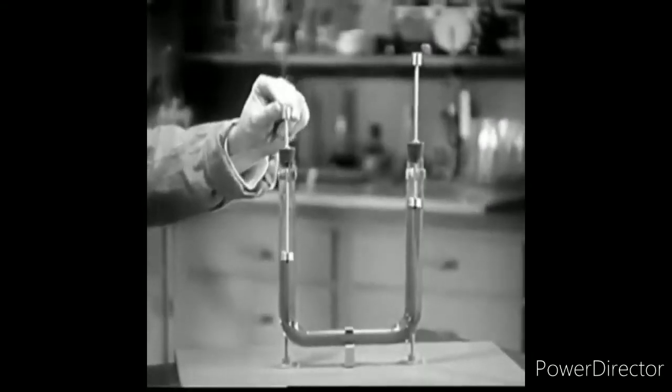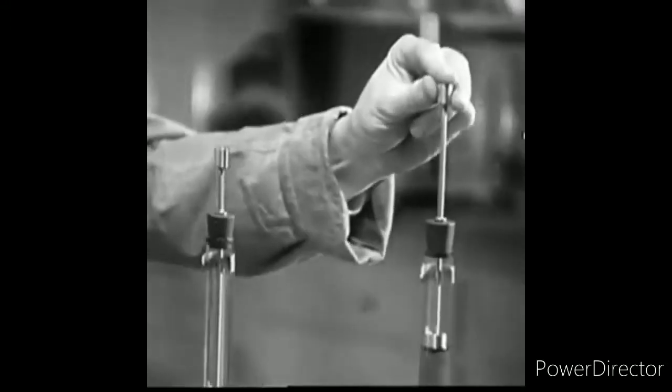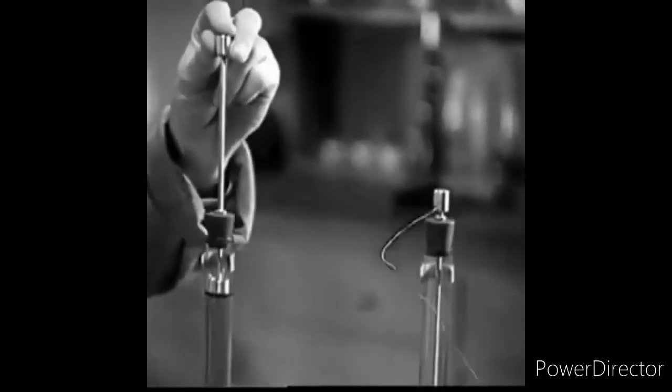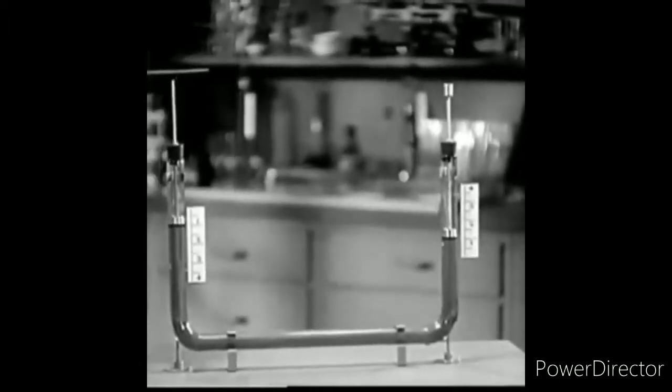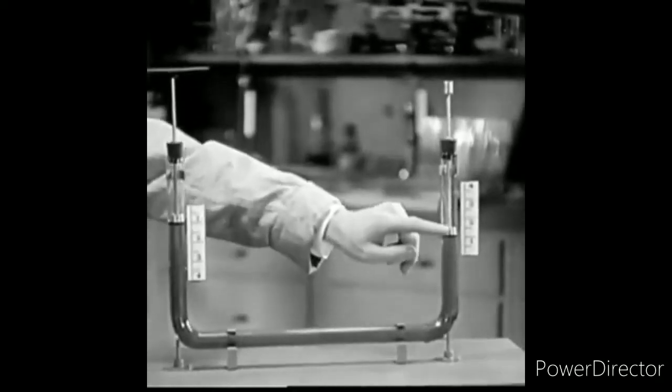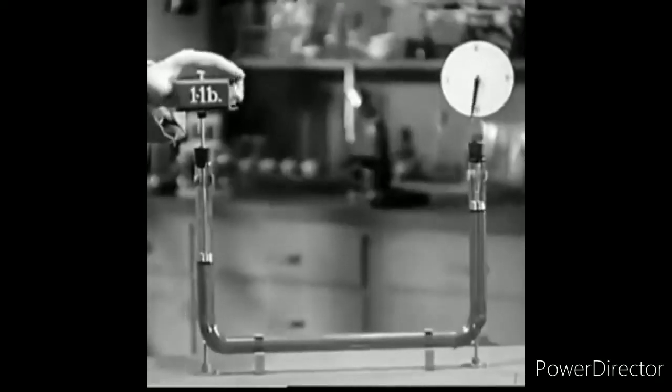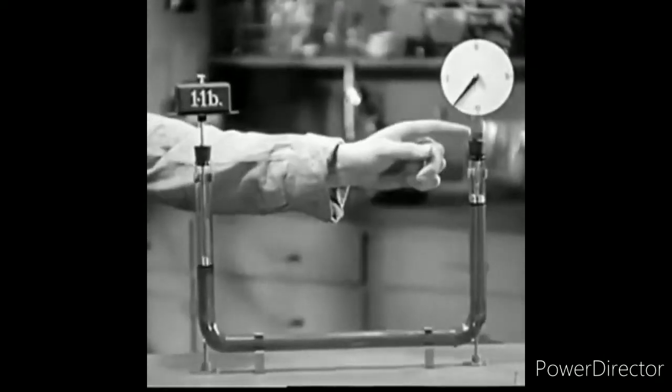Bending the pipe doesn't affect this transfer of power at all. It goes around corners just the same. When one plunger is pushed down an inch, the other end comes up an inch, and a pound of pressure exerted at one end is transmitted to the other.